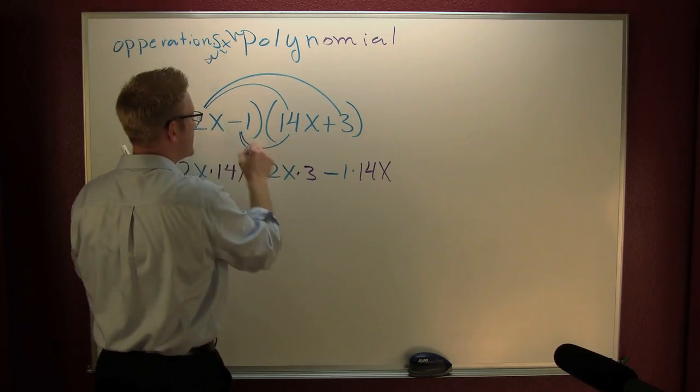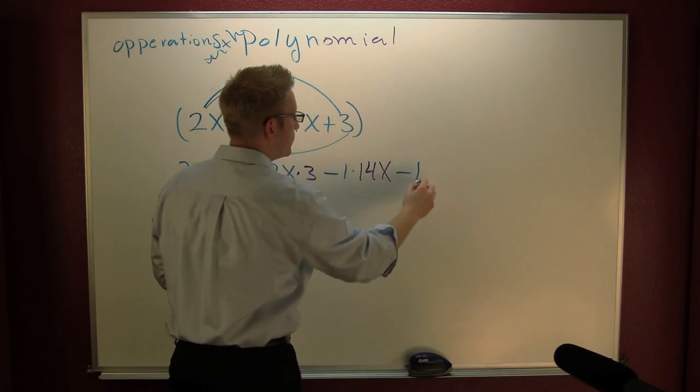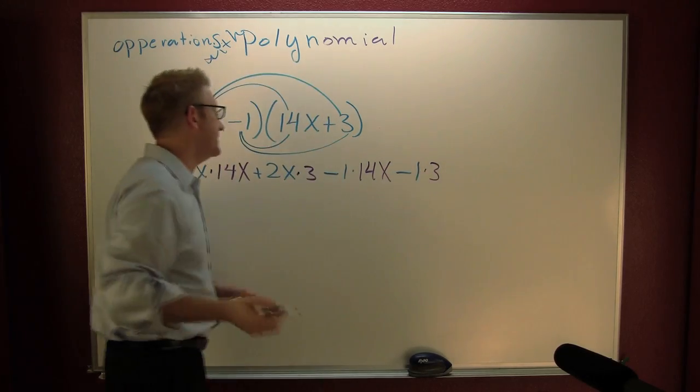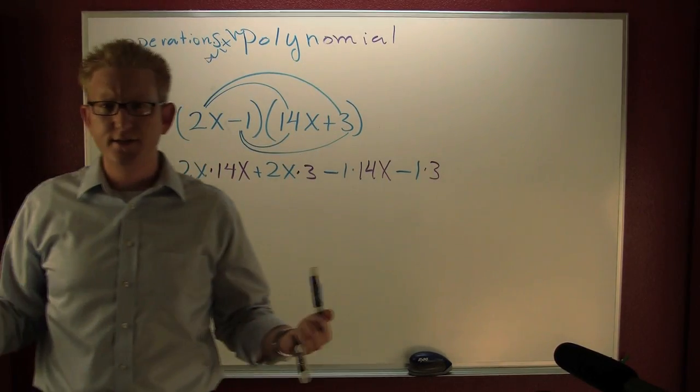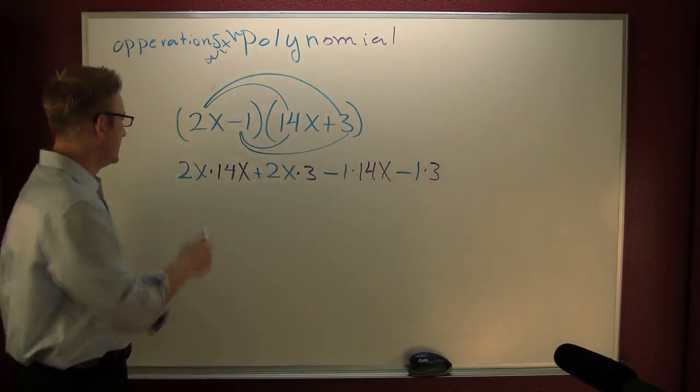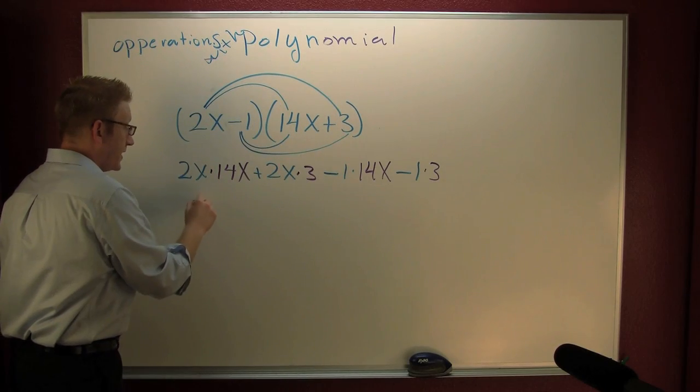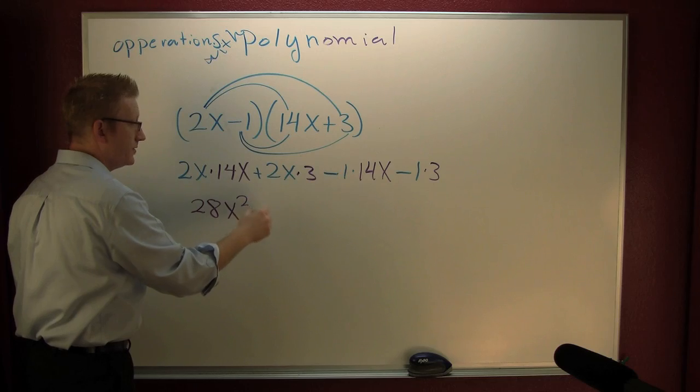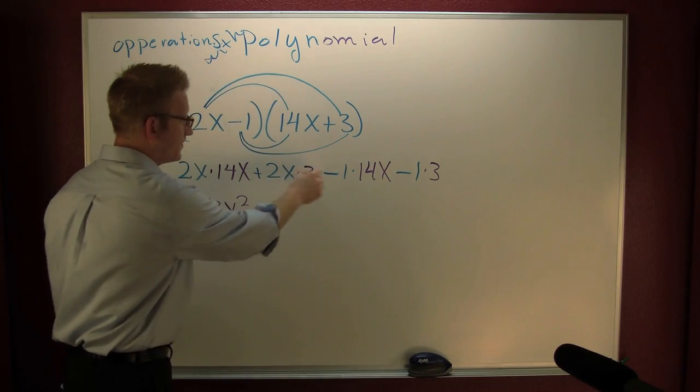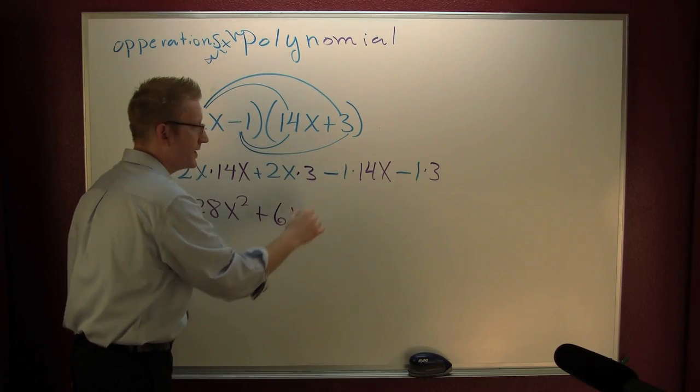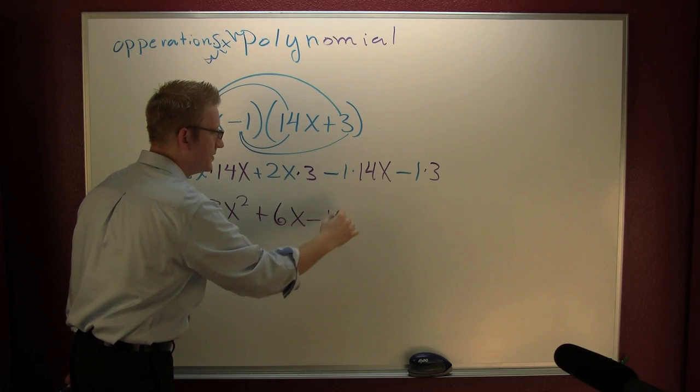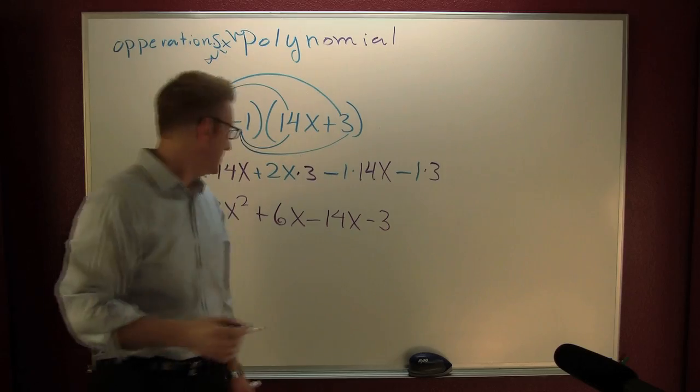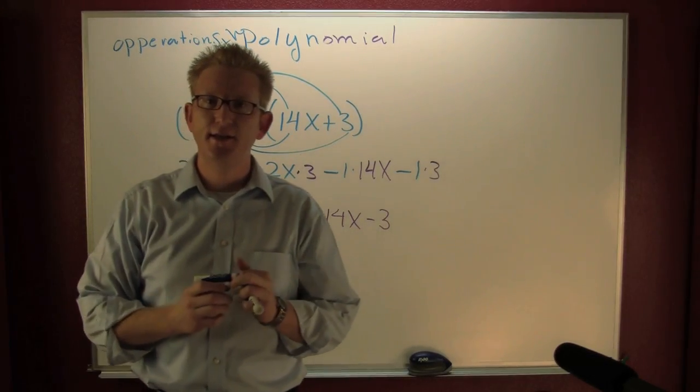That last - this is a minus 1 times that 3. Let's clean this up. That looks like 28x² plus 6x minus 14x minus 3.